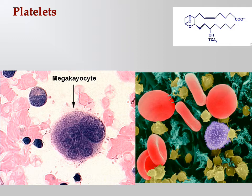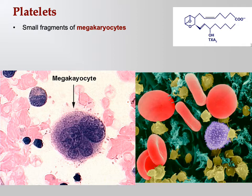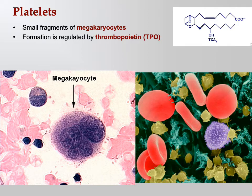Now let's talk about platelets — the third type of formed element. Platelets are small fragments of megakaryocytes. The megakaryocyte essentially explodes, bursting open and leaving fragments behind, and those fragments are the platelets. So platelets are not whole cells; they're just chunks of a cell. Their formation is regulated by thrombopoietin, the hormone that tells the hemocytoblast to turn into a megakaryocyte.